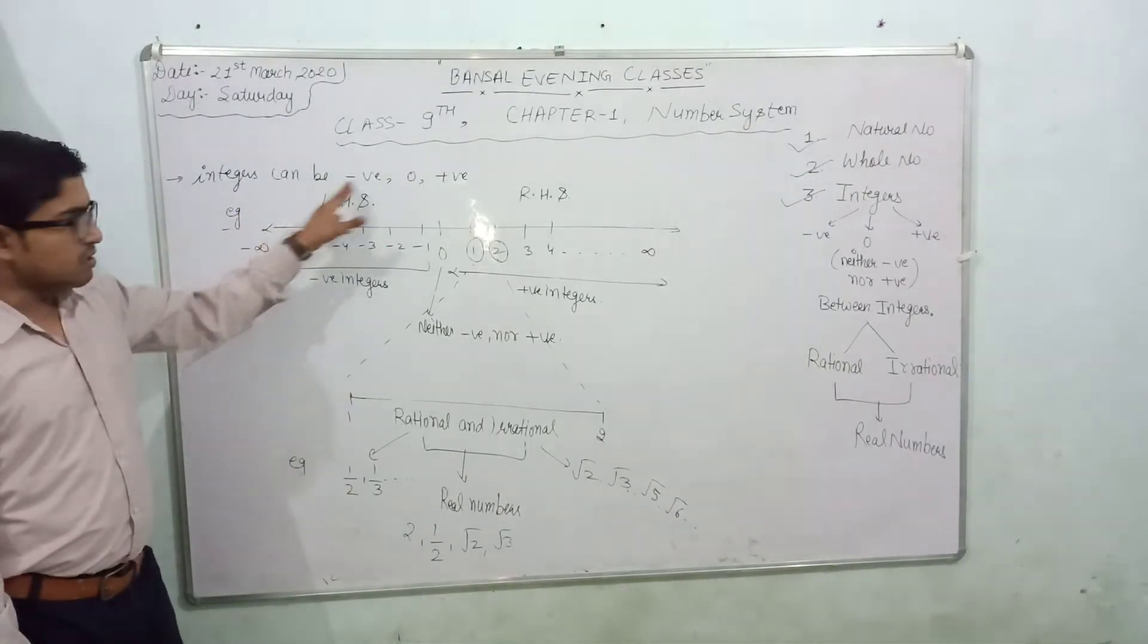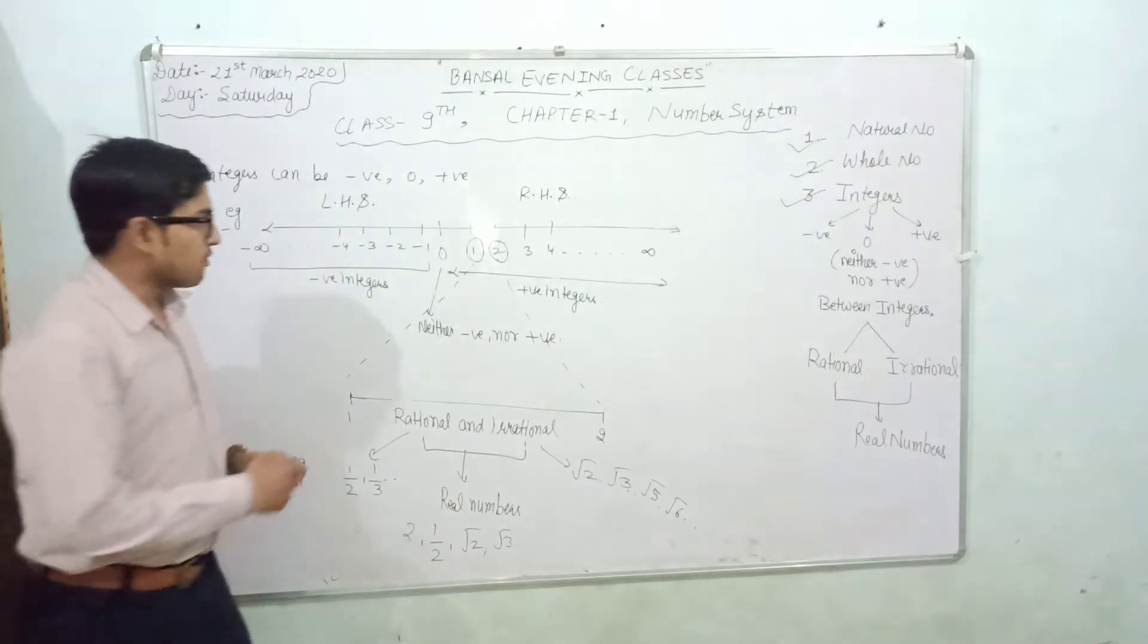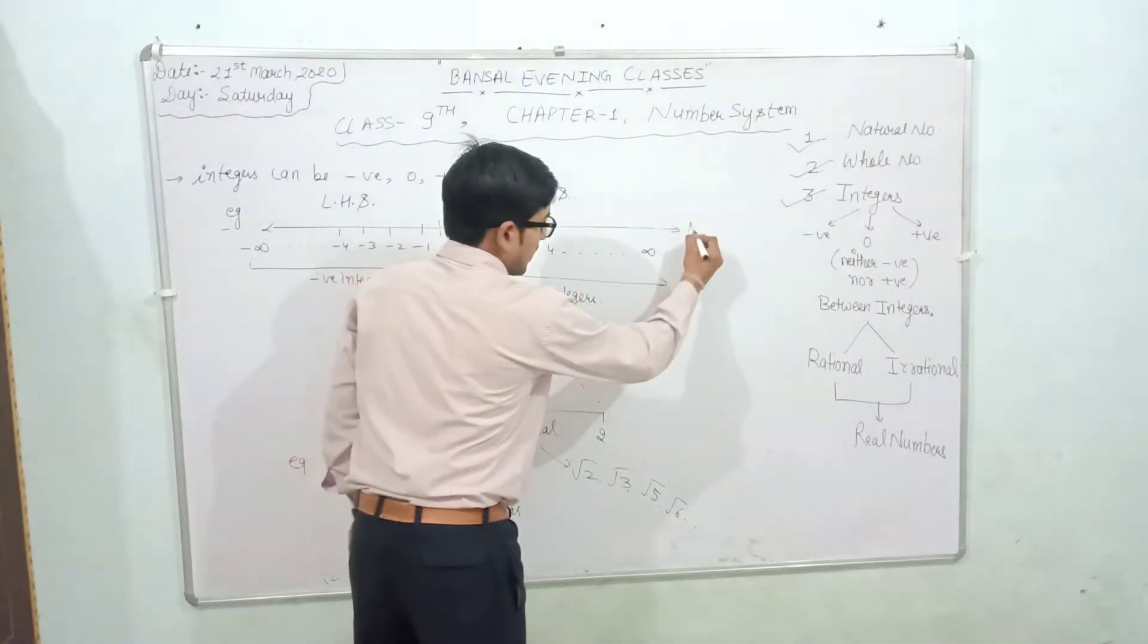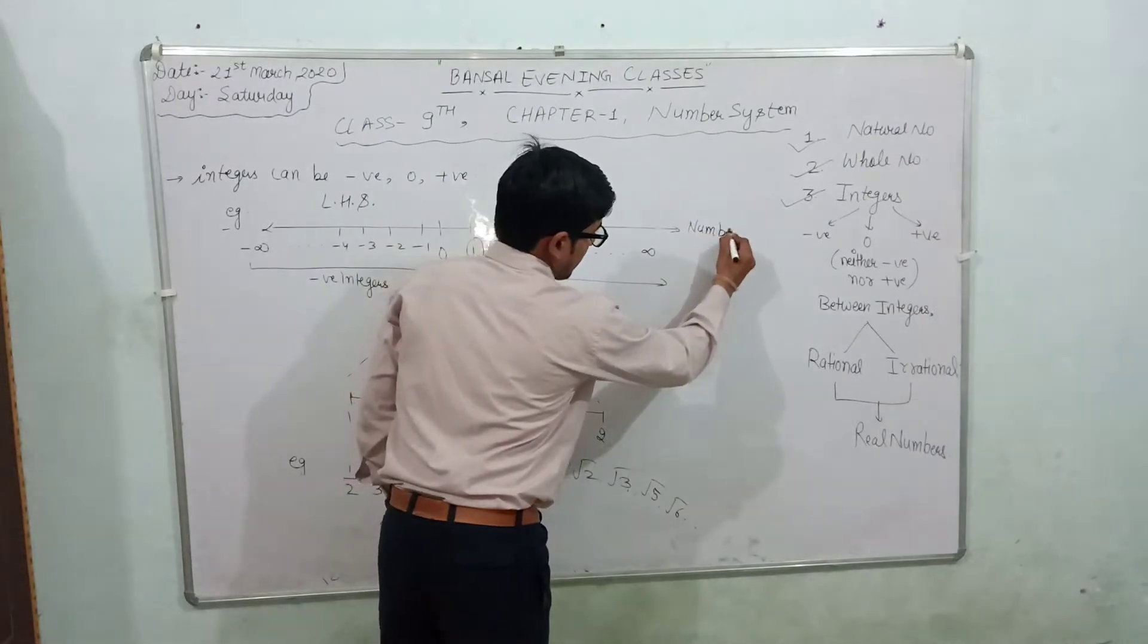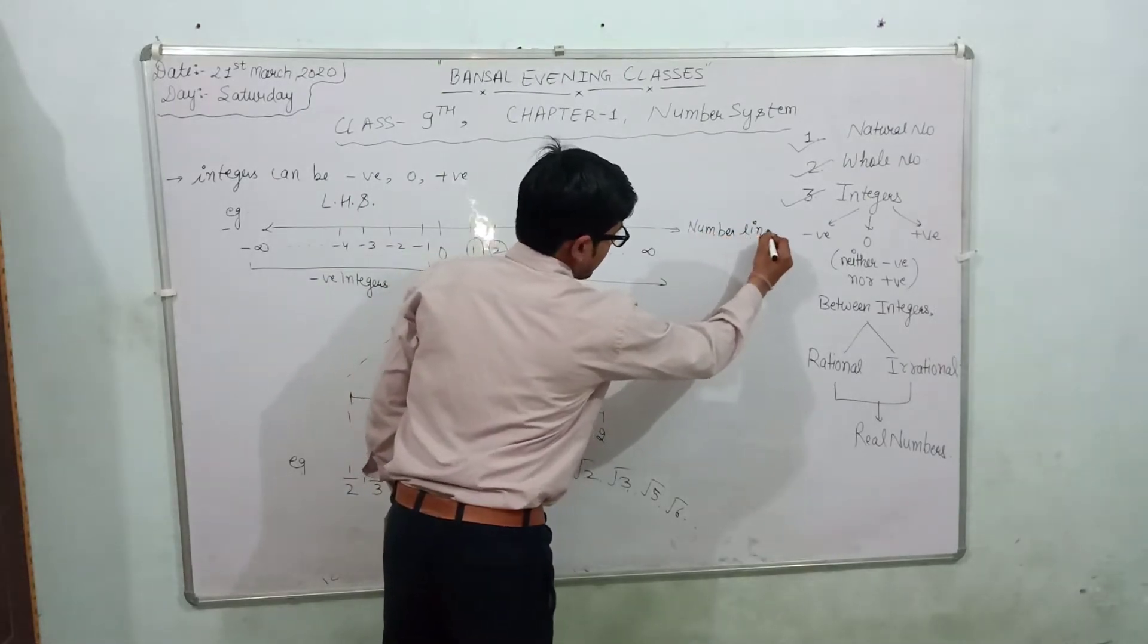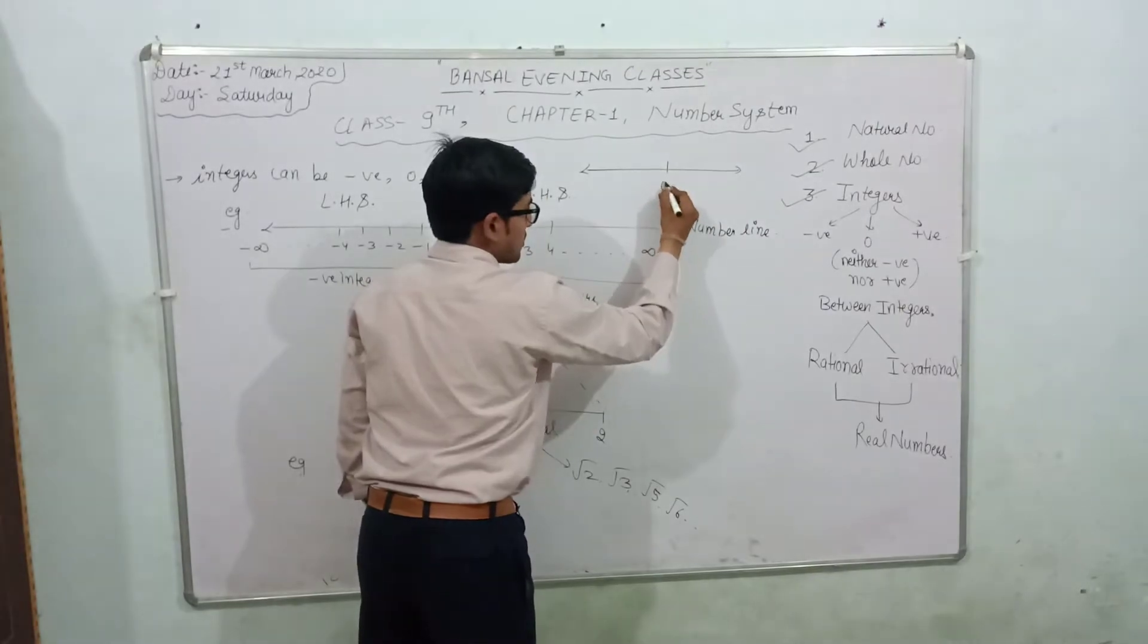Integers can be negative, zero, or positive. If I talk about this, this is a number line. In the middle of the number line, what we have? There is a number called zero.